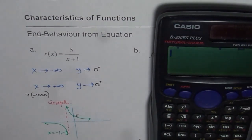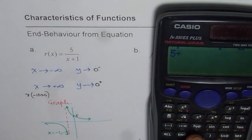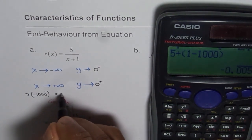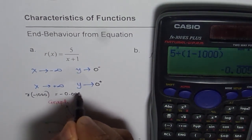So that will be 5 divided by, within brackets, we can write 1 minus 1,000, right? Bracket close is equal to, we get a negative value. Convert that to decimals. It is equals to negative 0.005.